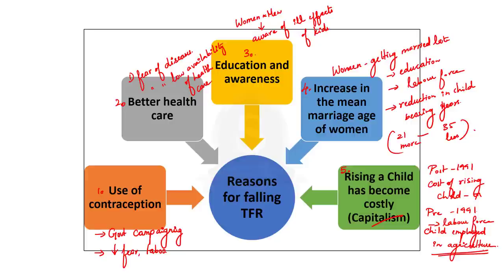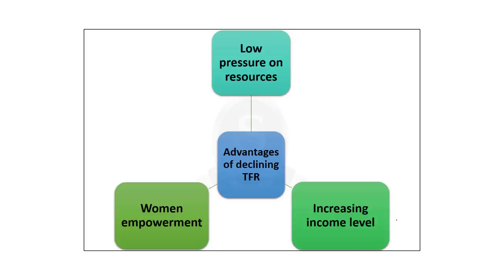To summarize, the reasons for falling TFR are: first, increased use of contraception; second, better healthcare; third, education; fourth, increase in the mean marriage age of women; and fifth, capitalism. Now, with this reasoning, we are going to see the advantages of reducing TFR.